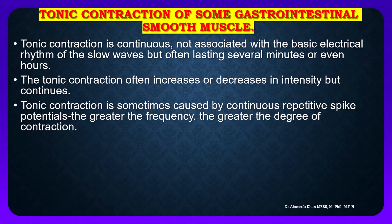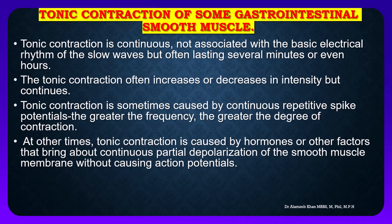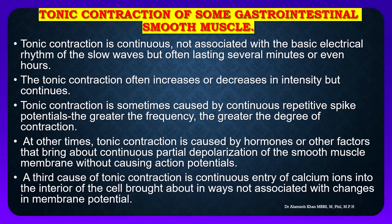Tonic contraction is sometimes caused by spike potentials — the greater the frequency of spikes, the greater the degree of contraction. At other times, tonic contraction is caused by hormones or other factors that bring about contraction or partial depolarization of the smooth muscle membrane without causing action potentials.